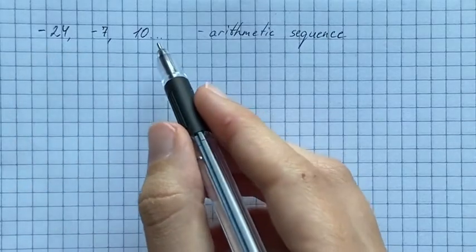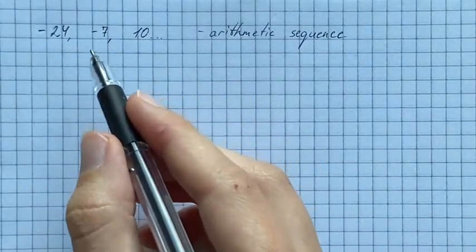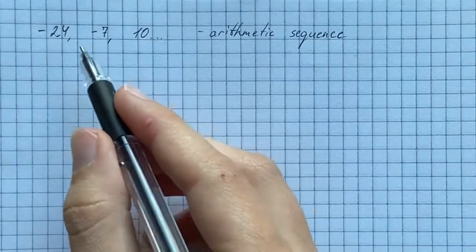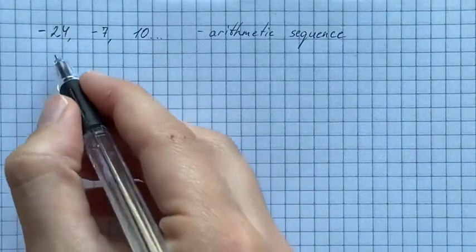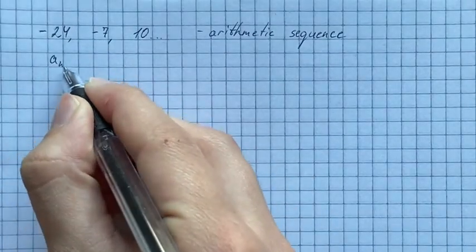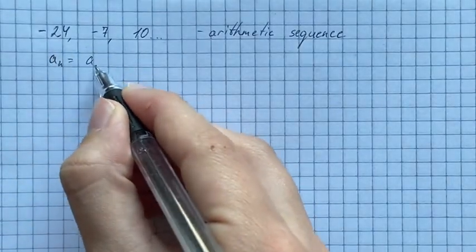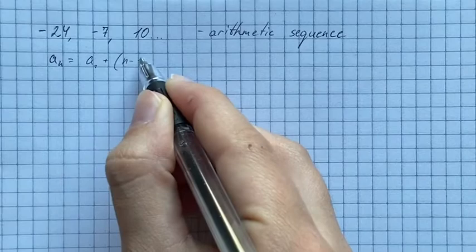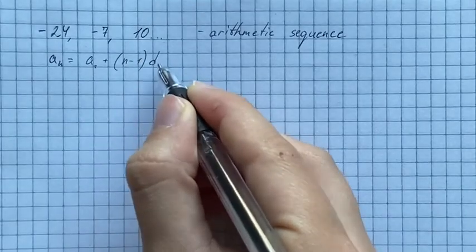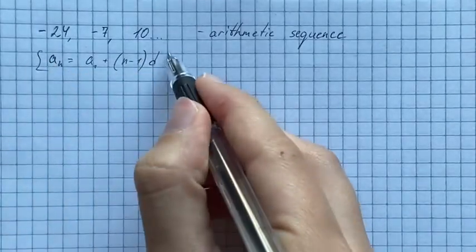We are given the arithmetic sequence and we have to find the 52nd term of this sequence. We're going to use the equation that the nth term of a sequence equals first term plus n minus one times common difference of the sequence.